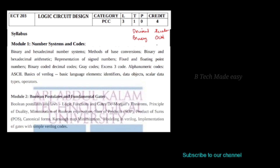The main topic is learning how many number systems there are. If we use normal numbers, we are using the decimal number system. In digital systems, we also use binary and hexadecimal number systems.